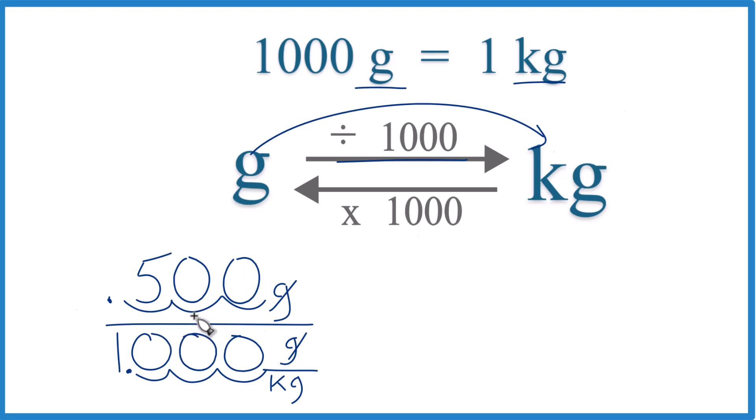We end up with 500 grams equals 0.500 kilograms. And you can write that like this. And you don't need to put these zeros at the end here. So 500 grams, 0.5 kilograms.